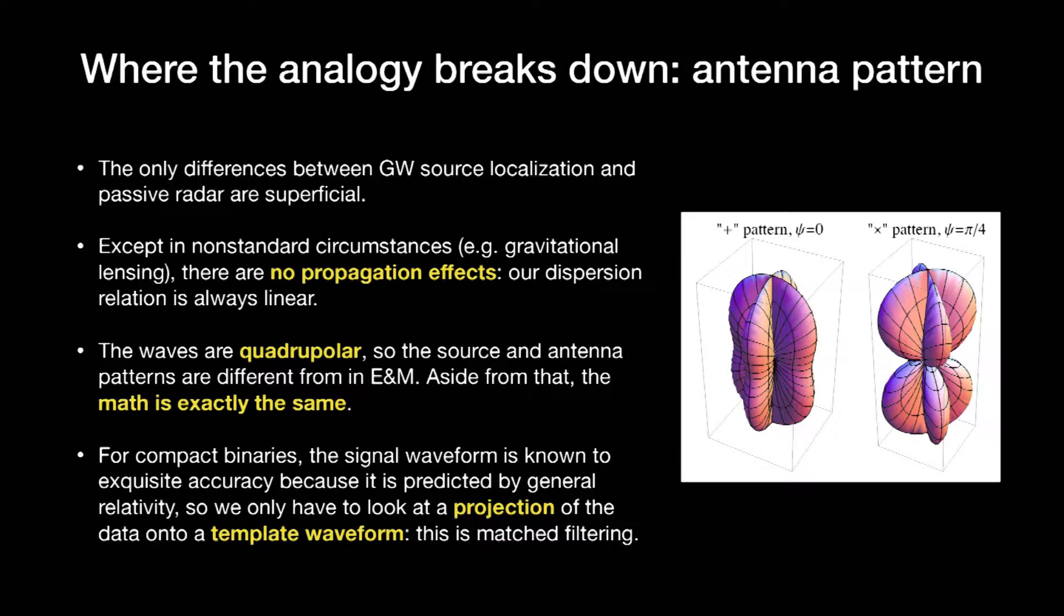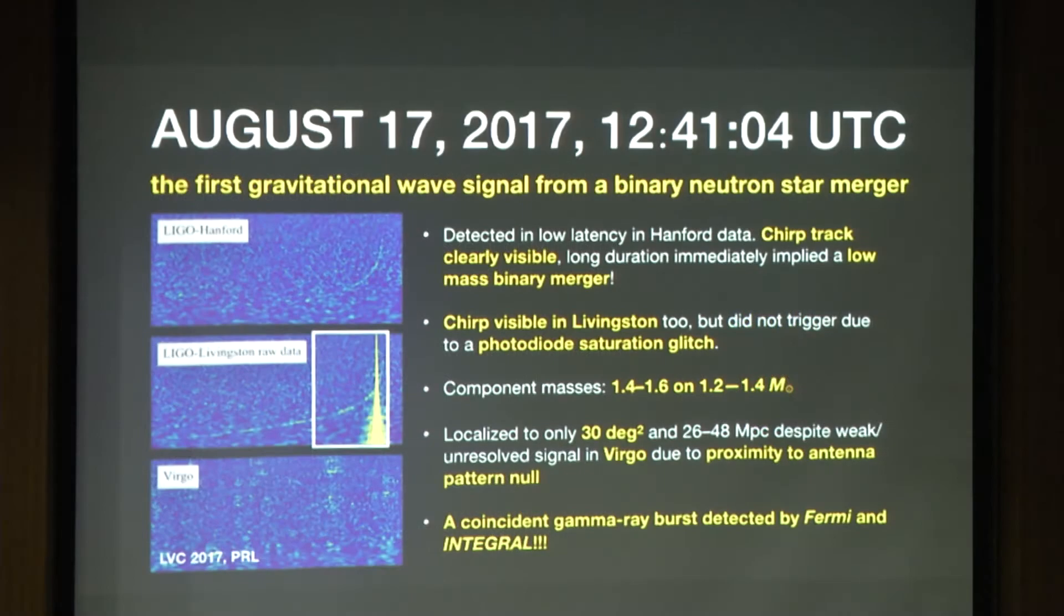Aside from that detail of the antenna patterns, the math is exactly the same as passive radio localization. Another detail for compact binaries is that we know the signal waveform so accurately because we model it with general relativity, that we don't actually have to look at the whole data. We just look at the projection of the data stream onto a template waveform. That's called match filtering.